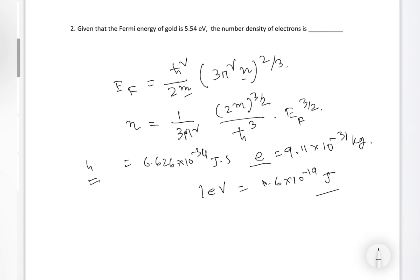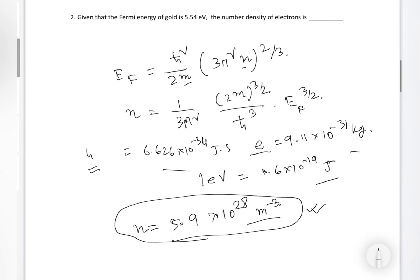If you calculate them together, we will come to 5.9 × 10^28 per meter cube. Because we are putting everything in SI unit, it will also come in the SI unit. We will have this number of electrons. That is the electron density. Let's go to the next problem.